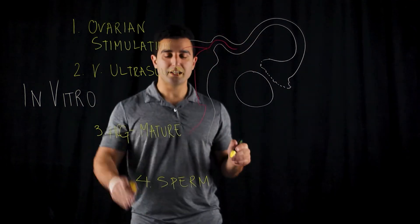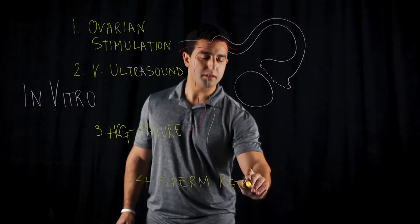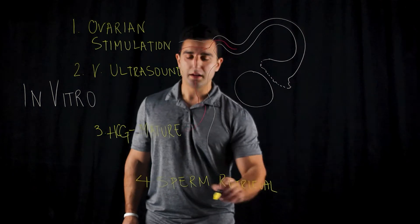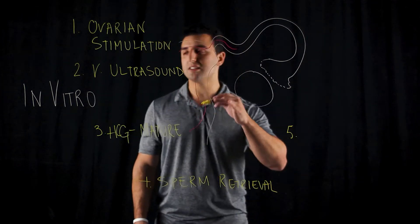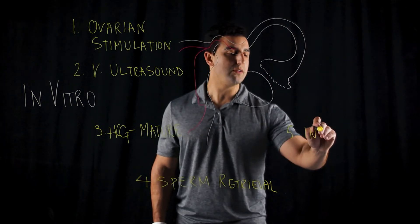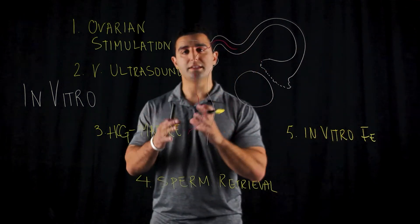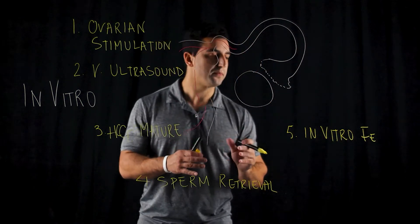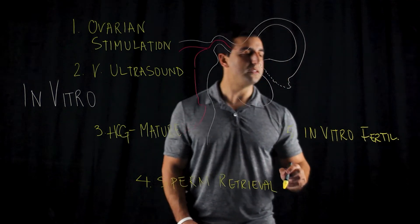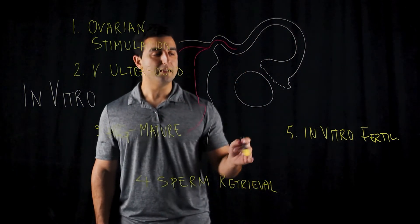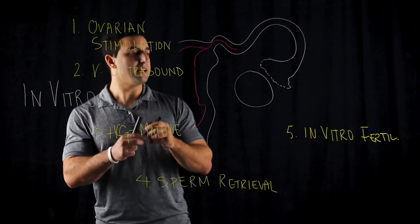Now you have sperm and you have egg — next you need to combine them. This is where the in vitro portion comes in: a doctor or lab technician grabs the sperm and egg and places them together on a petri dish for in vitro fertilization to take place.